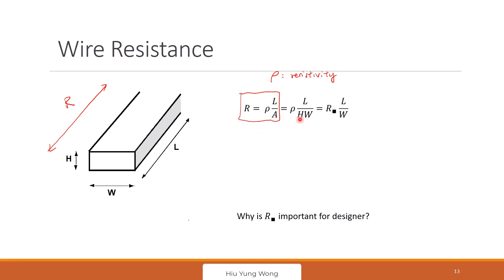Now, that area is H times W. Now, as a circuit designer, you have no control on which two parameters. You cannot control ρ, you cannot control H. You are only the guy doing the so-called layout. You only control the W and L.